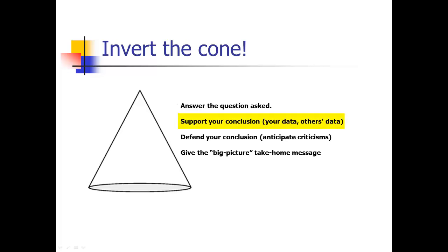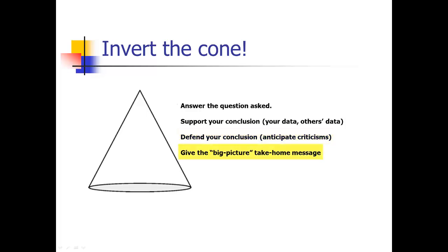You've given what you think the answer to the question is based on your data. Then you're going to support that conclusion with your data and other people's data from the literature. Give all the lines of evidence — say how your results fit in the context of the literature. Then you're going to defend your conclusions. This is the obligatory limitations section of your discussion. You want to anticipate the criticisms that people might have, the reasons they might disagree with your conclusions. Defend your conclusions, and then at the end, go broad.